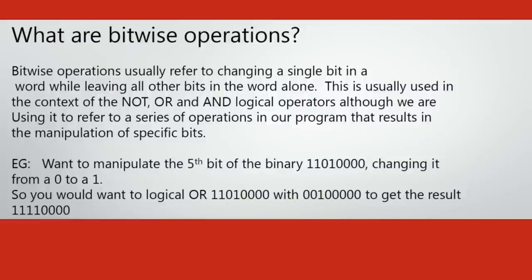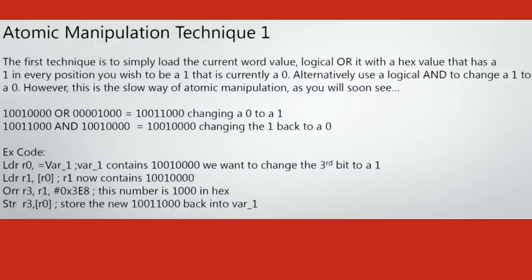This technique of bitwise manipulation, sometimes referred to as atomic manipulation, is the easiest. As you can see in this example code, I want to manipulate a single bit in this binary, so I load the value into register one, OR it with the necessary binary to change that zero to a one, and store the value in R3, then store the value stored in R3 back into the memory location pointed to by R0, in this case variable one. So at the end of this, the memory location of variable one will contain the same value as before except for that one changed bit.